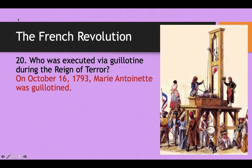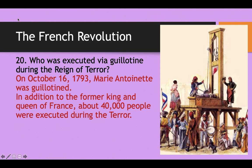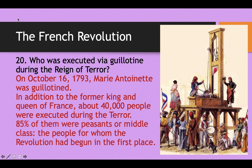On October 16th, 1793, the Queen of France, Marie Antoinette, was also guillotined — just a few months after King Louis died in January. In addition to the former king and queen, about 40,000 people were executed during the Terror by guillotine. What was especially shocking is that 85% of them were peasants or middle class — the very people for whom the revolution had begun in the first place. Like the instructor said, the French Revolution really did not accomplish anything at all.